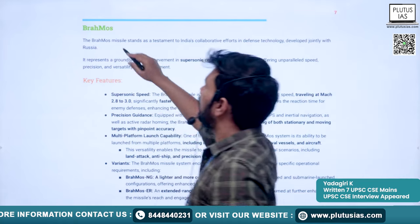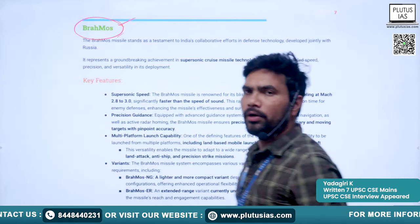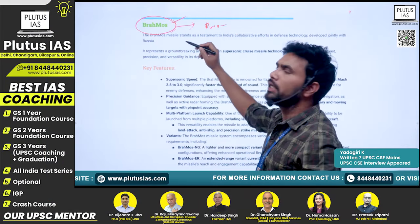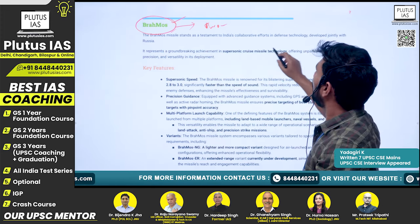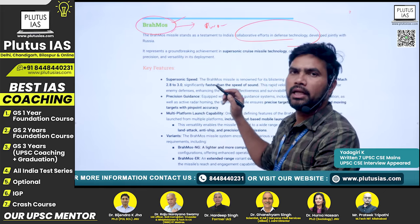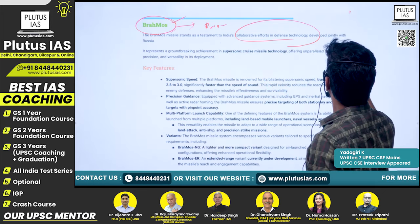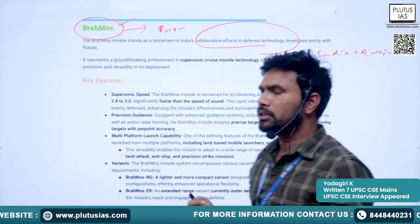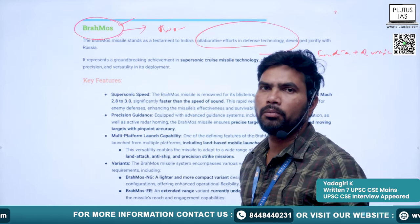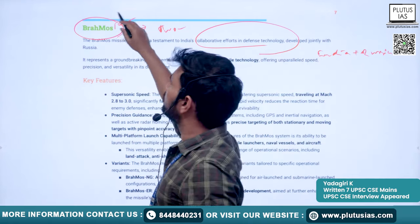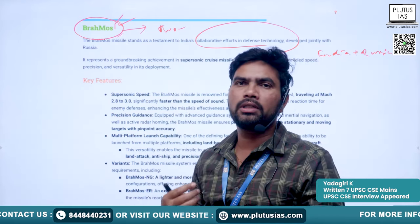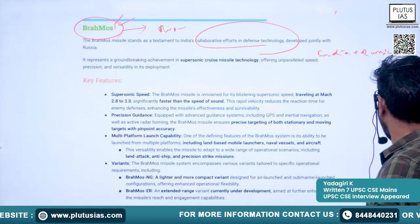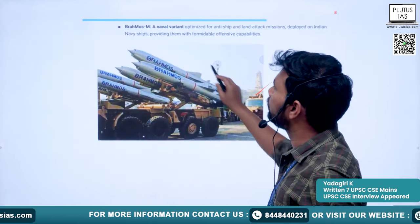Next is BrahMos, a very important missile. It is named after two important rivers — Brahmaputra (India) and Moskva (Russia). BrahMos is the outcome of a collaboration between India and Russia — a joint development project.